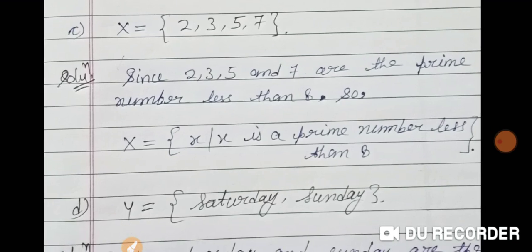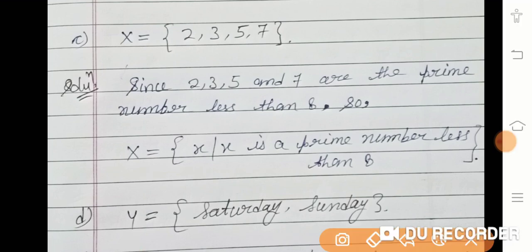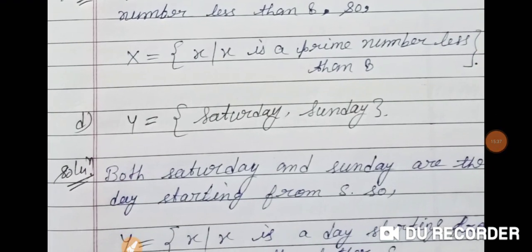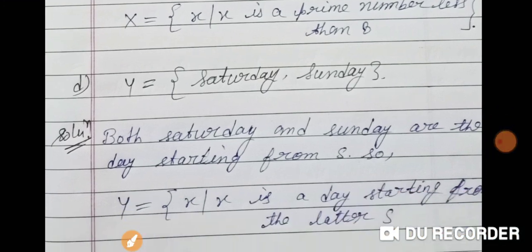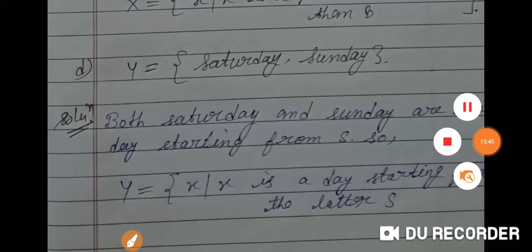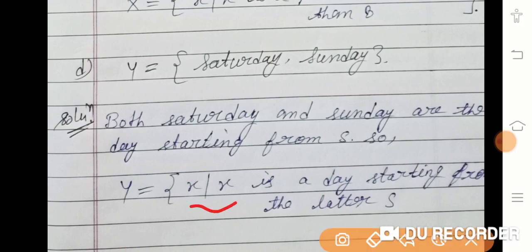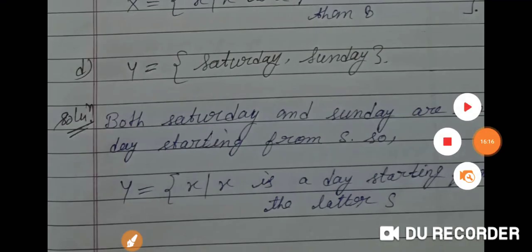C: X = {2, 3, 5, 7} — these are prime numbers. So in set builder form: X = {x | x is a prime number}. D: Y = {Saturday, Sunday} — both days start with the letter S. So Y = {x | x is a day of the week starting with the letter S}.